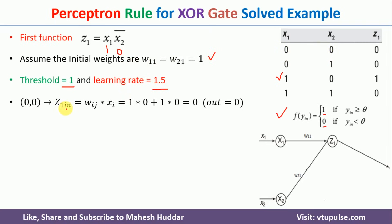I will start with the first input, which is 0,0. The net input Z1_in = Σ(Wij·Xi) = W11·X1 + W21·X2 = 1×0 + 1×0 = 0. Since net input 0 is not greater than the threshold of 1, the output is 0, and the expected output is also 0. No issues in this case.